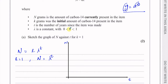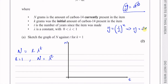Lambda is between 0 and 1, so lambda is basically a fraction. For example, suppose it was one half — it's less than 1 and greater than 0, so it's positive but it's a fraction. If I have y equals one half to the power of x, that becomes y equals 2 to the power of negative x, because one half is 2 to the power of negative 1.